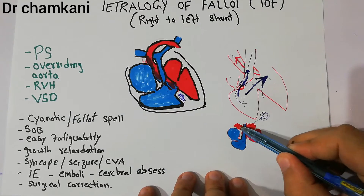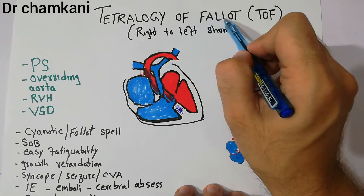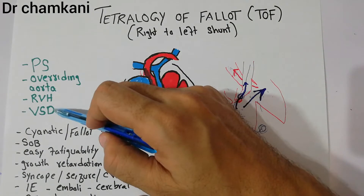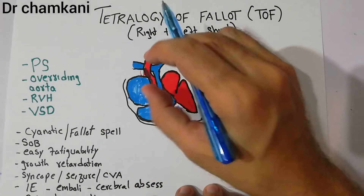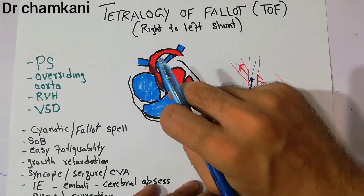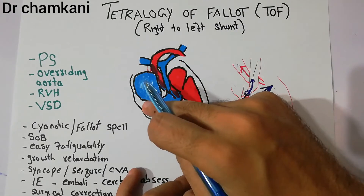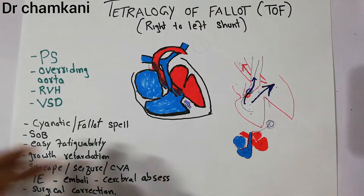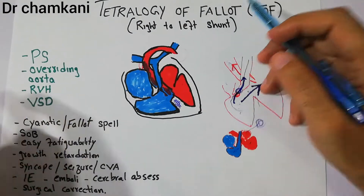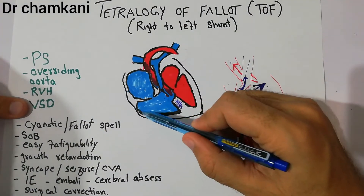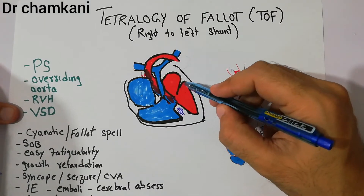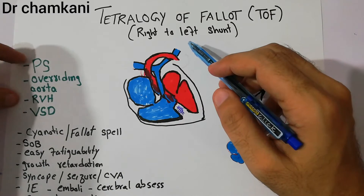In a normal heart, blood from the left ventricle goes directly into the aorta. But in Tetralogy of Fallot, apart from pulmonary stenosis and VSD, the overriding aorta allows deoxygenated blood to also enter the aorta. The final problem is right ventricular hypertrophy — the muscle mass of the right ventricle is hypertrophied, increased as compared to the left side.